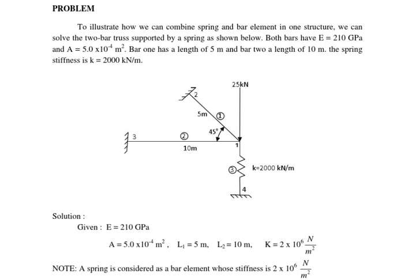A load of 25 kilonewton is applied at node 1. The nodes are labeled 1, 2, 3, and 4. We need to find the displacements at nodes 1, 2, and 3. For a truss element, there are two displacement components at each node: horizontal displacement U and vertical displacement V. So we have U1, V1 at node 1; U2, V2 at node 2; U3, V3 at node 3; and U4, V4 at node 4.